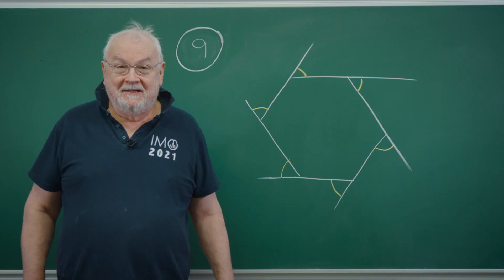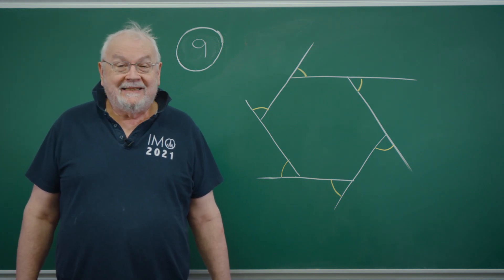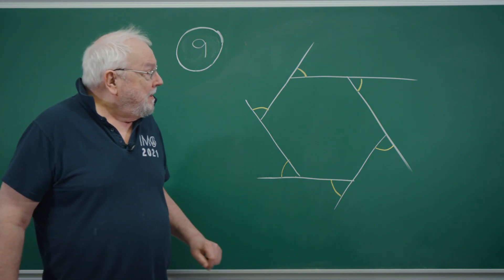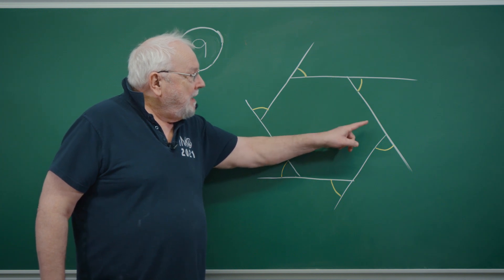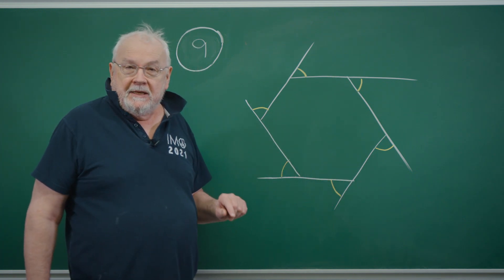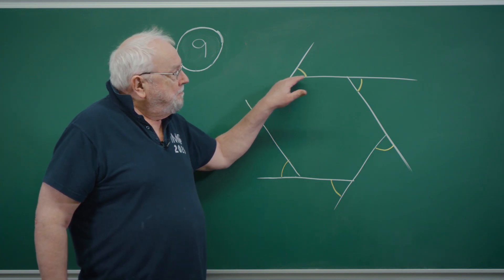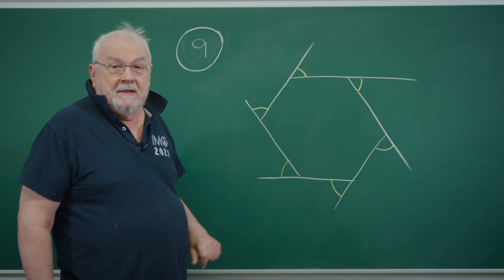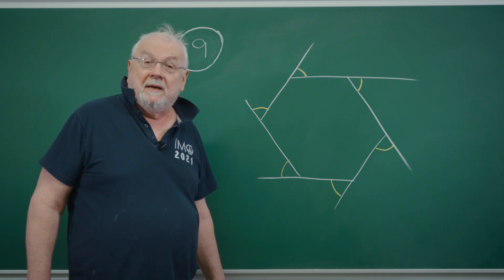Question nine is about a regular hexagon and we need to understand its angles. Looking at the diagram, the internal angles are tricky to get at directly, so instead what I've done is to produce the sides like this, giving six angles which are manifestly equal to one another.